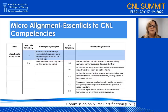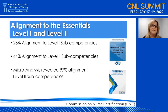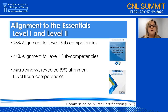What we found was that the level two sub-competencies of the Essentials aligned with the CNL competencies at 97%. This means that out of the 209 sub-competencies identified in the Essentials level two, 202 of the CNL competencies were represented — again, at 97%. To recap: 23% of the CNL sub-competencies aligned with level one, and 64% aligned with level two, but the micro-analysis revealed that the CNL competencies aligned with the AACN Essentials level two sub-competencies at 97%.